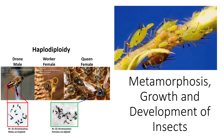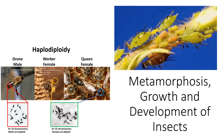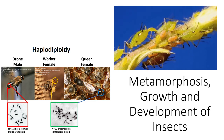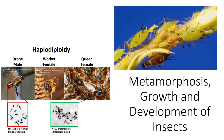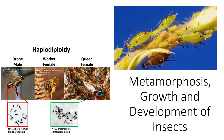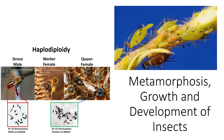Did you know that aphids give birth to live young through parthenogenesis? This is reproduction without males, so a whole colony of aphids can start if just one aphid is left. An adult female can give birth to 12 baby aphids per day, with a total of 50 to 100 offspring and up to 20 additional generations during a season. And you wonder why aphids are such a problem on plants.